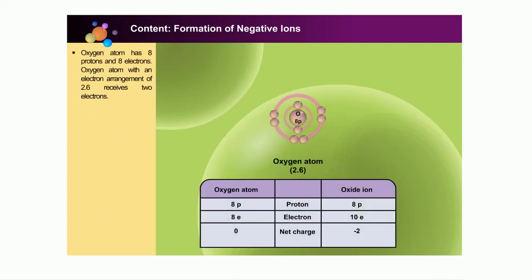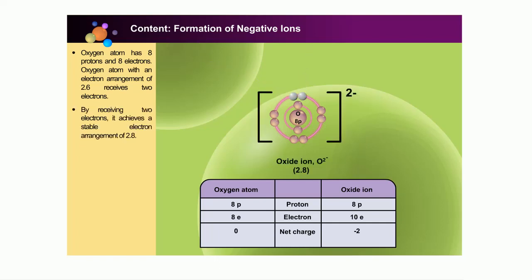Oxygen atom has an equal number of protons and electrons, which are 8 protons and 8 electrons. This oxygen atom with an electron arrangement of 2-6 receives 2 electrons. By receiving 2 electrons, it achieves an octet with a stable electron arrangement of 2-8. Thus, the oxygen atom now has 8 protons and 10 electrons — that is, it has gained a net negative charge of 2 and becomes a negative ion.